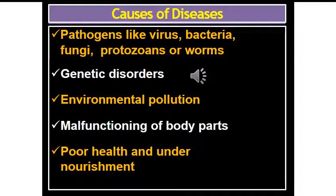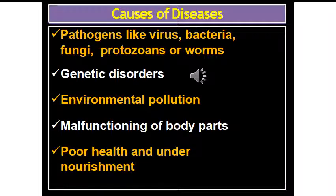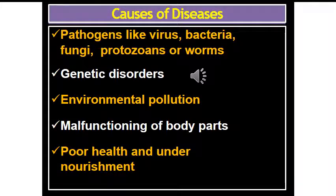As we have discussed the causes of diseases, this is the next topic. Pathogens like viruses, bacteria, fungi, protozoans, or worms are the first reason. Second is genetic disorder, third is environmental pollution, fourth is malfunctioning of body parts, fifth is poor health and under-nourishment. Before discussing these reasons, let us see a story mentioned in your textbook on page number 179.